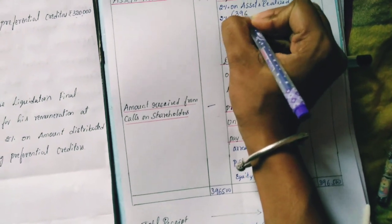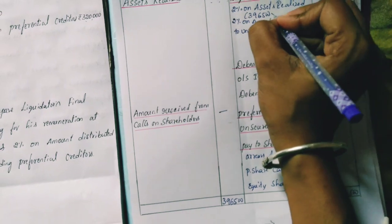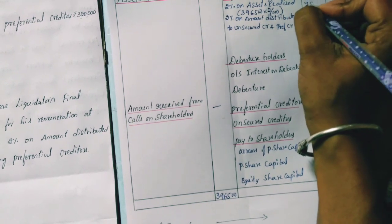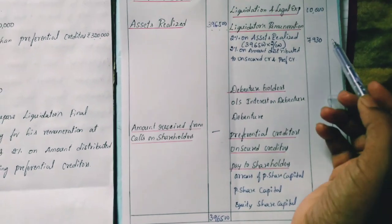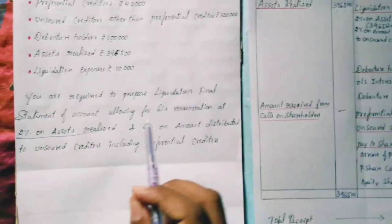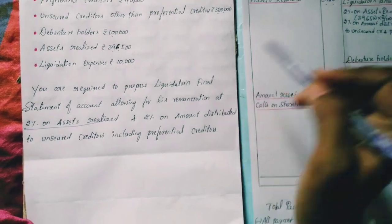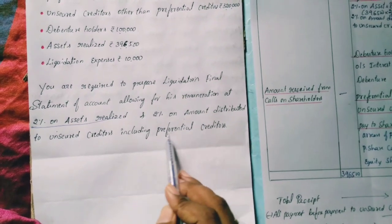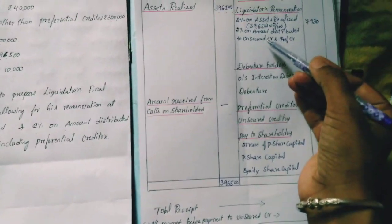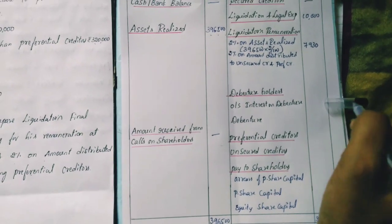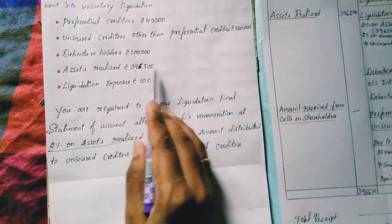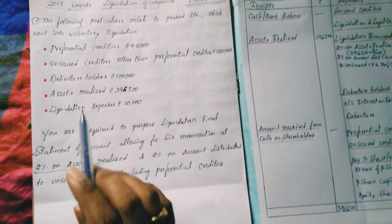2% on assets realized of Rs.3,96,500. Now check debenture holders — no outstanding interest information is given for debentures, so just take the debenture value. Debenture holders value is Rs.1,00,000.